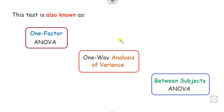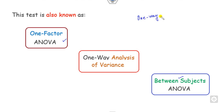First of all, one-way ANOVA is also called as one-factor ANOVA. It is also called as one-way analysis of variance and as the between-subjects ANOVA. All of these refer to the same one-way ANOVA.